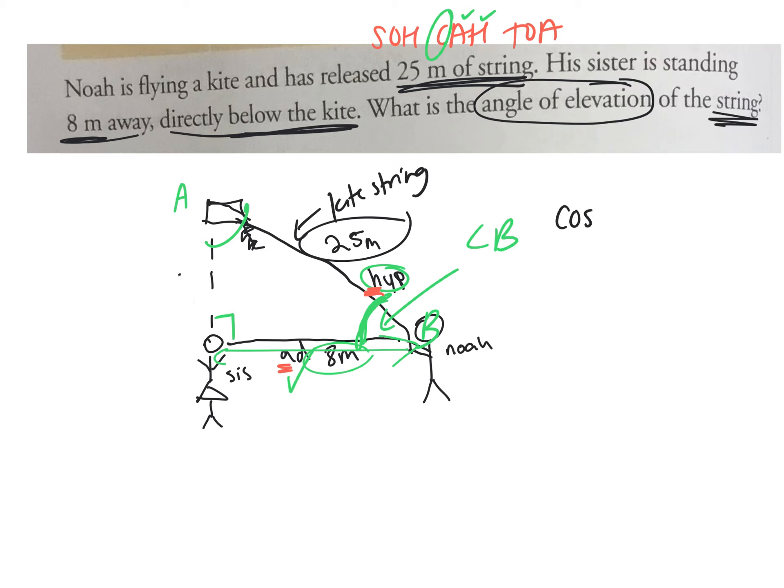So cos B, right? We don't know. So this one we're finding the angle. Equals adjacent is 8 and hypotenuse is 25. What is 8 divided by 25? 0.32, right?